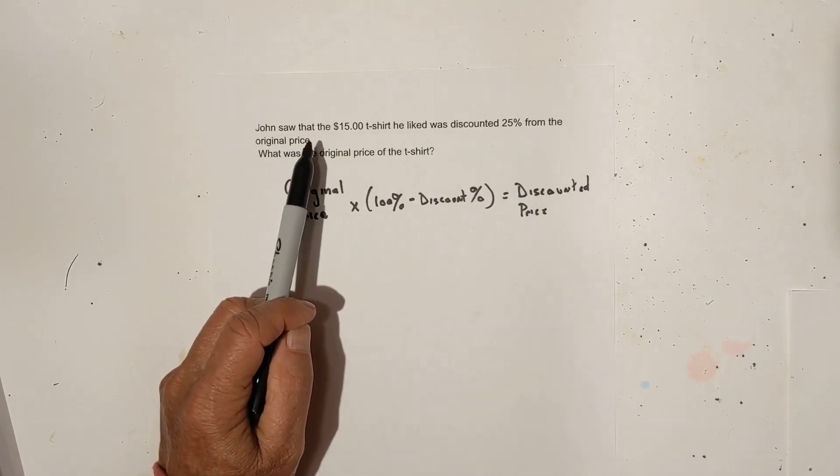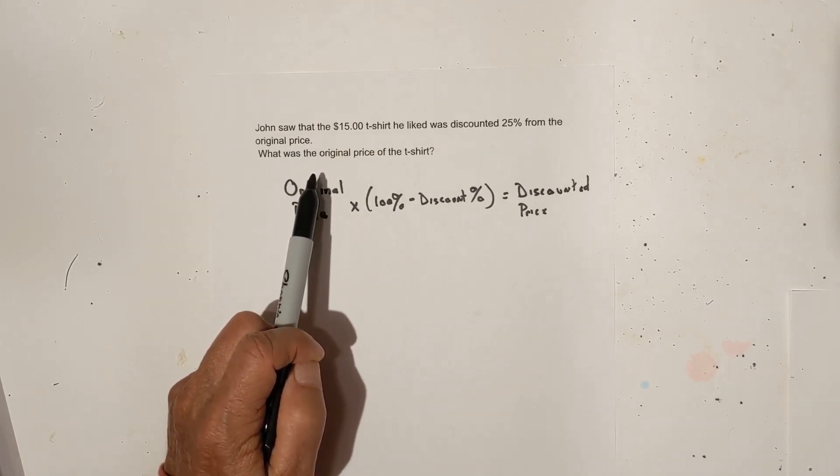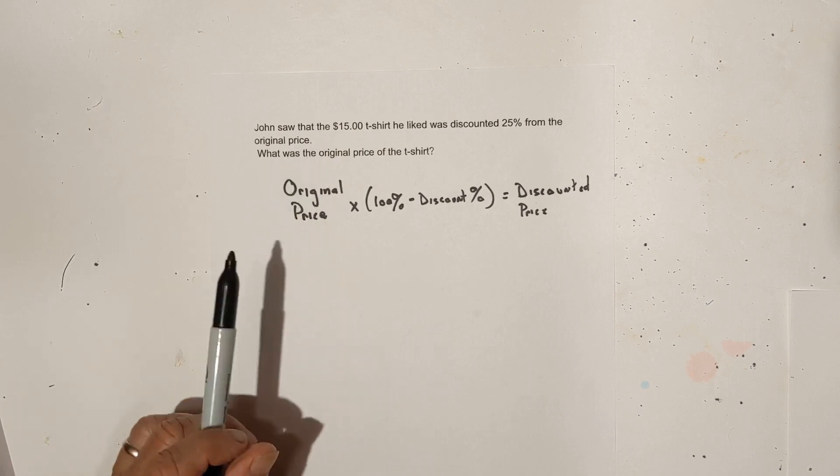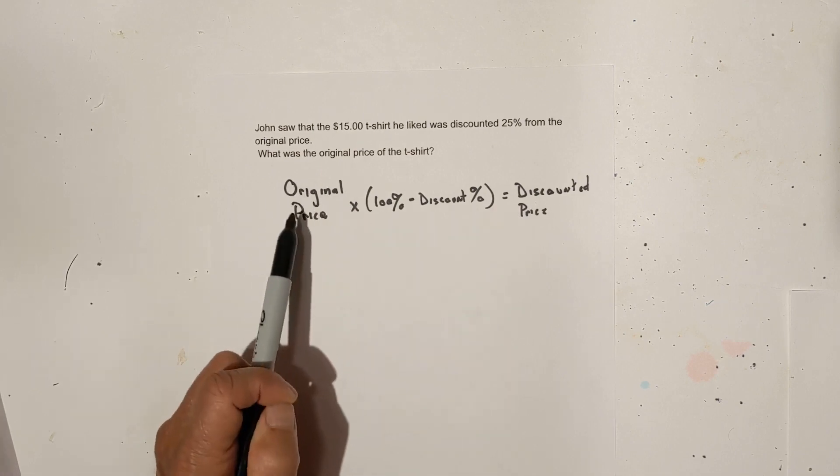Here's our first example problem. John saw that the $15 t-shirt he liked was discounted 25% from the original price. What was the original price of the t-shirt? To find the discounted price, you use this formula.